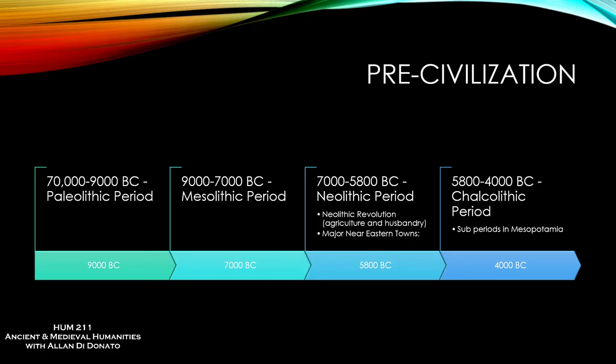The last period you probably haven't heard of is the Chalcolithic period. Chalcolithic refers to the fact that people start to use copper as a tool. All of these periods are named after the technology. The word Chalcolithic literally means the copper stone — it's a mixture of the two — referring to the types of equipment used at that period.